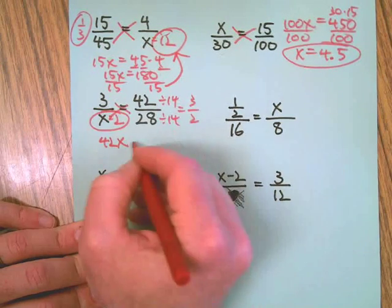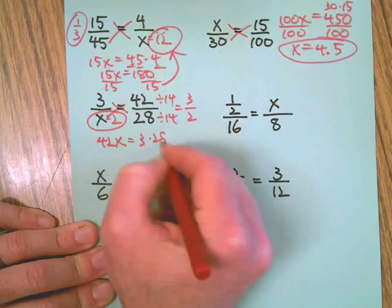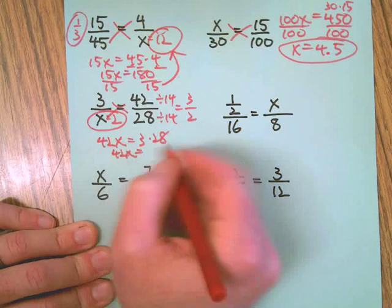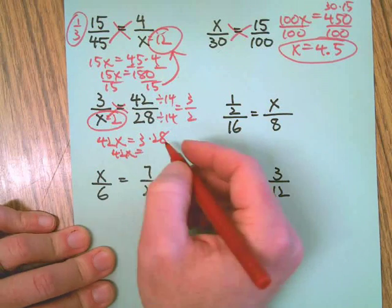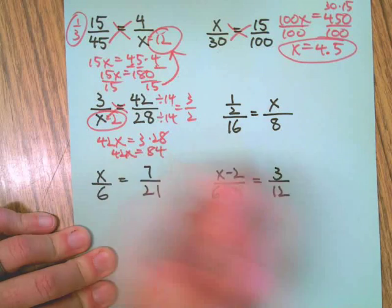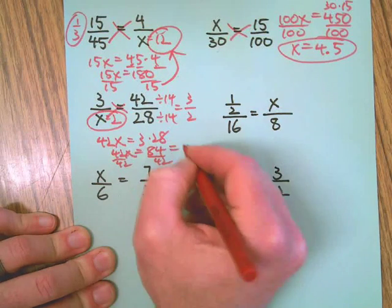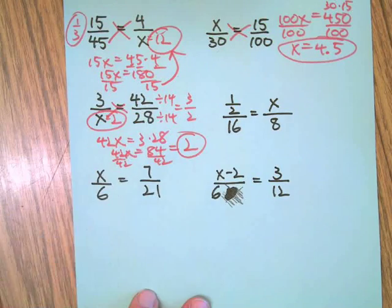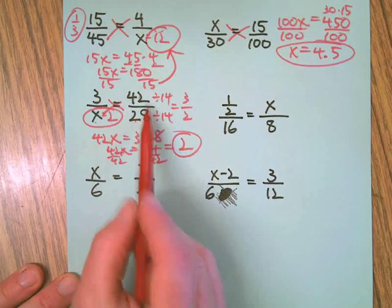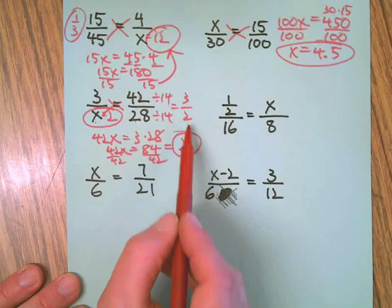42 times X, 3 times 28. 42X equals 75 plus 9, which is 84. Divide both sides by 42, and you guessed it, it's 2.